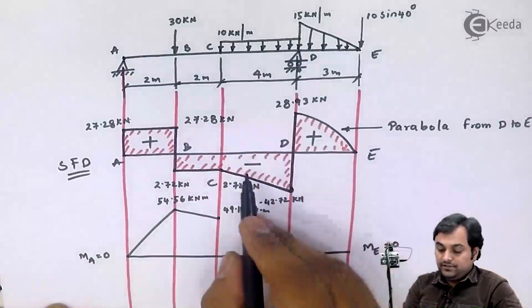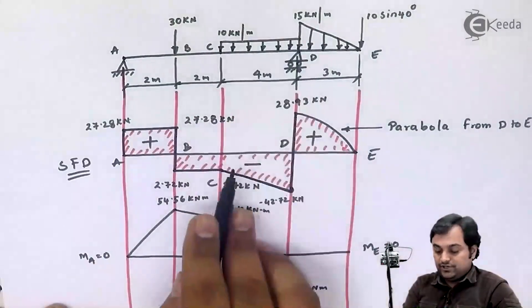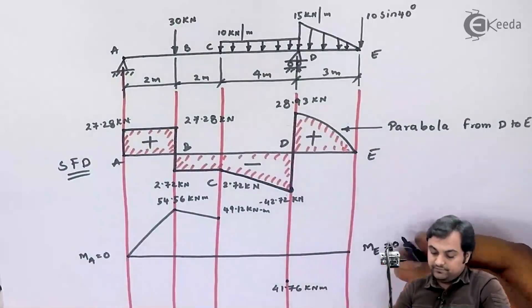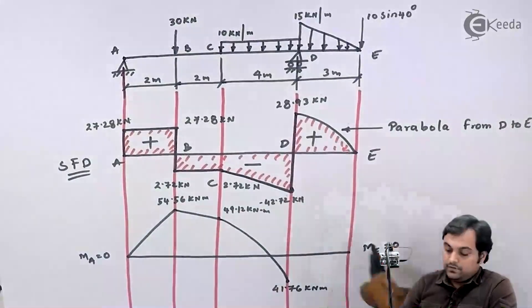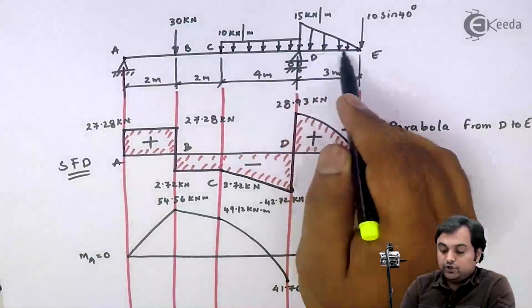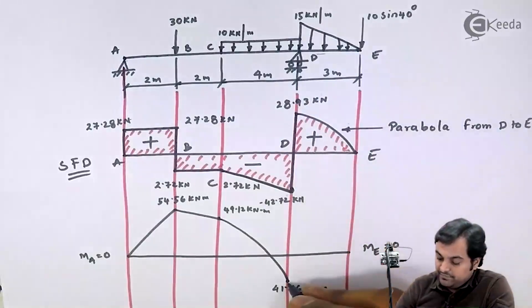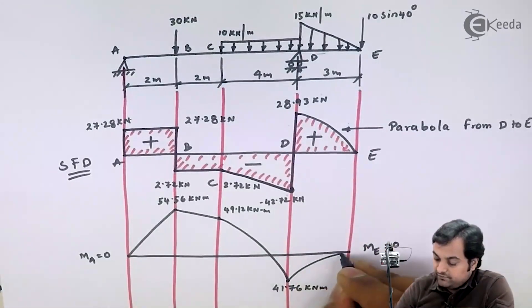Between C to D there was UDL, shear force was inclined line so bending moment should be a parabolic curve. Between D to E there was UVL and whenever we have UVL, shear force is parabola and bending moment is cubic curve.